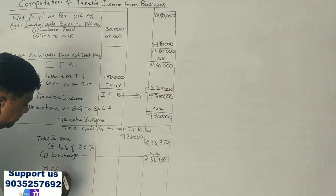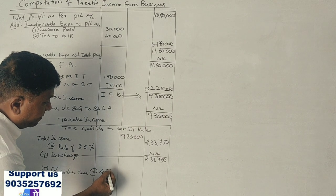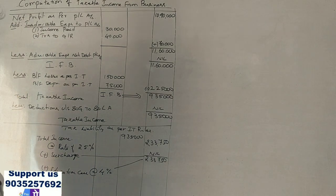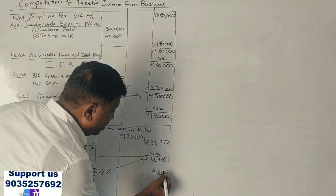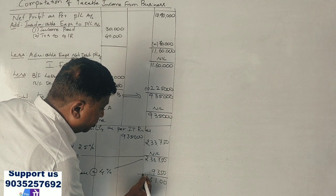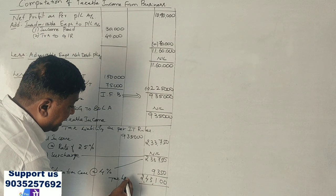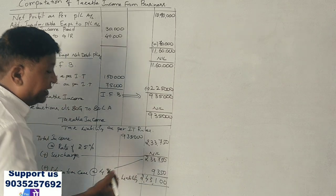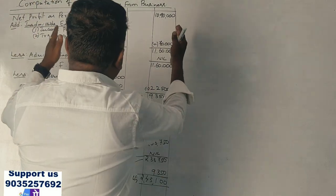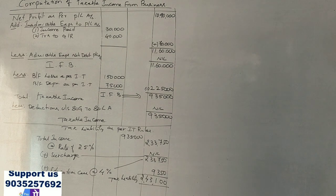Education cess and secondary and higher education cess at 4% is applied on 2,33,750 rupees. This gives us 9,350 rupees as cess on 2,33,750. Therefore, tax liability as per normal tax provision is 2,43,100 rupees.